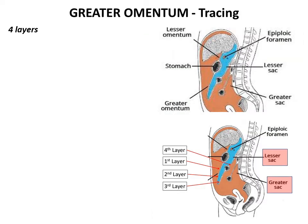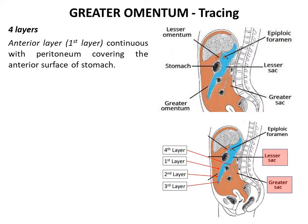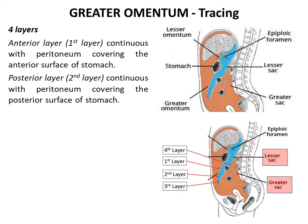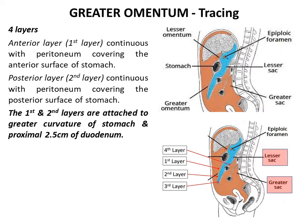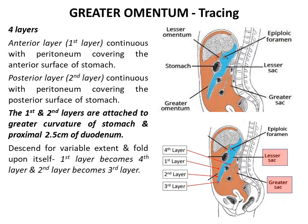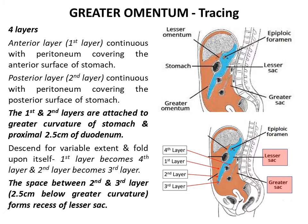The tracing of the greater omentum is important. It is made up of four layers. The anterior layer (first layer) is continuous with the peritoneum covering the anterior surface of the stomach. The posterior layer (second layer) is continuous with the peritoneum over the posterior surface of the stomach. Both layers are attached to the greater curvature of the stomach and the proximal 2.5 centimeters of the duodenum. The two layers extend downwards then fold back upon themselves, such that the first becomes the fourth layer and the second becomes the third. The space between the second and third layers extends approximately 2.5 centimeters below the greater curvature, forming the recess of the lesser sac.